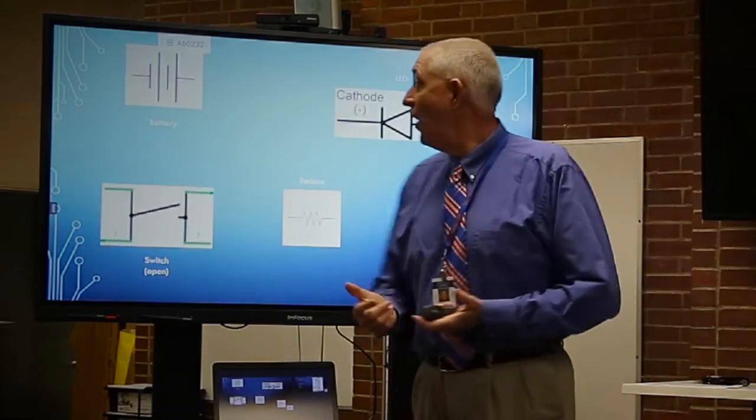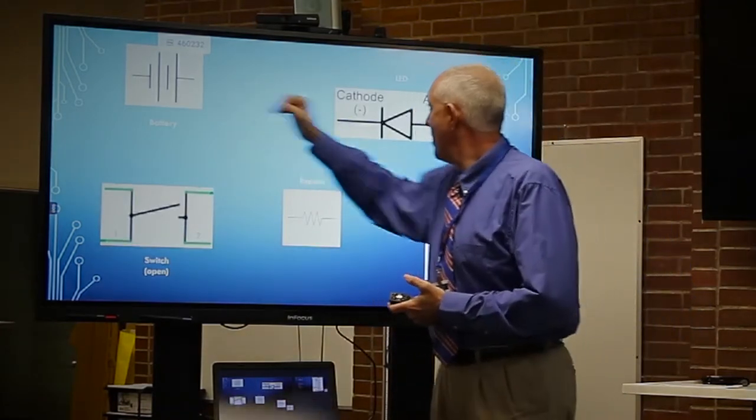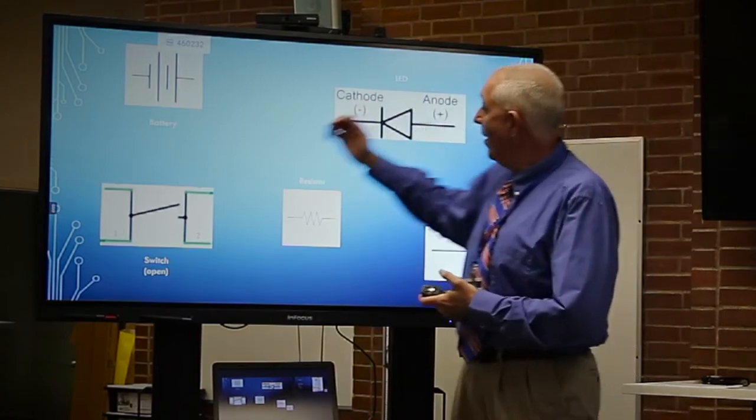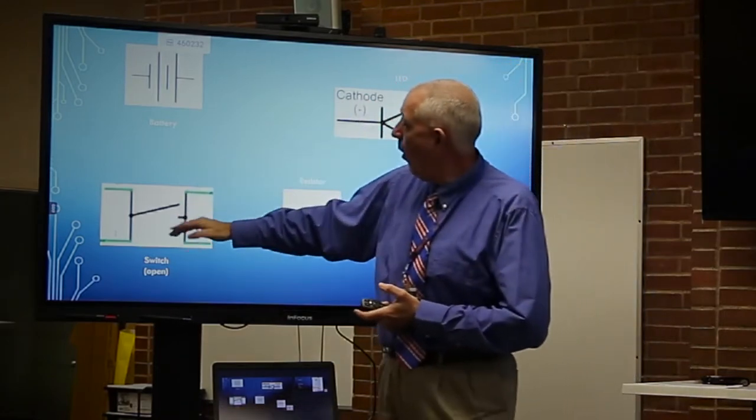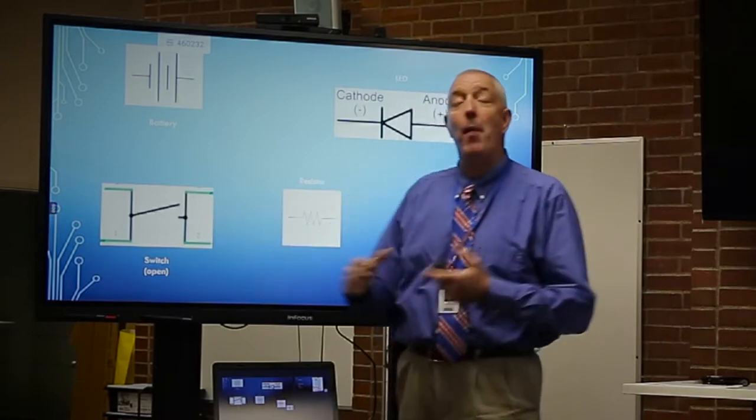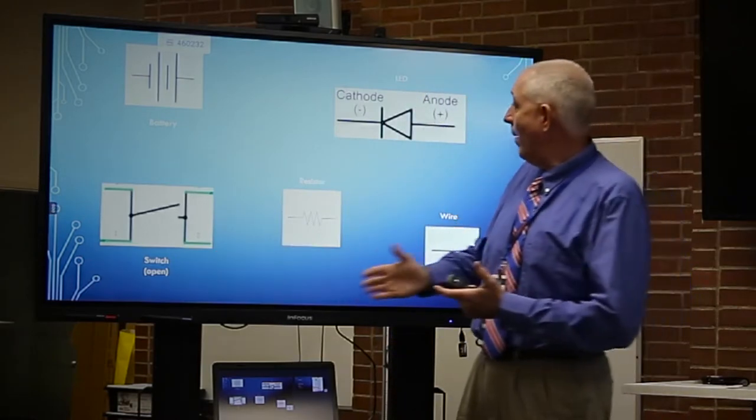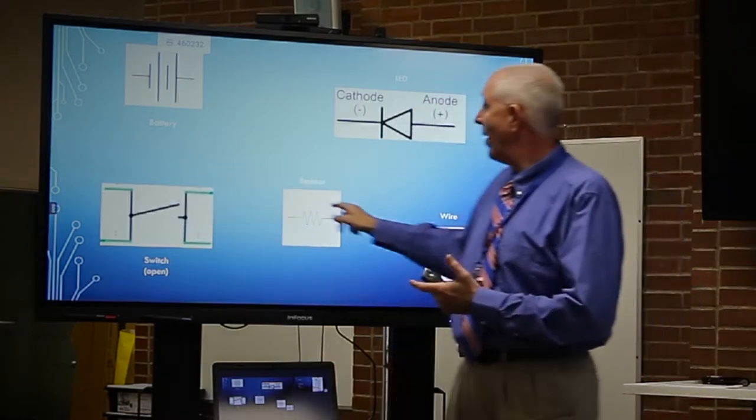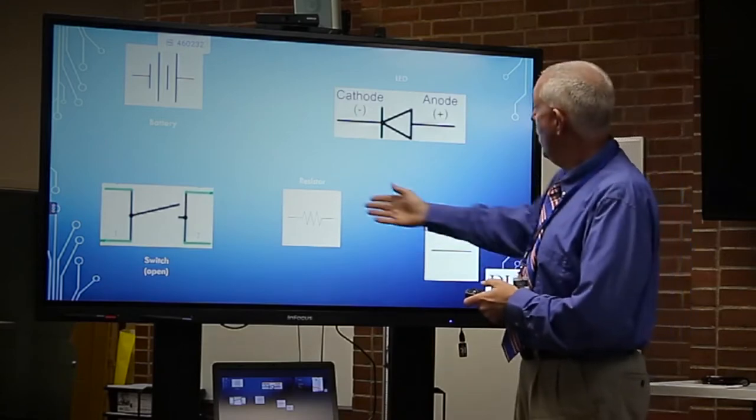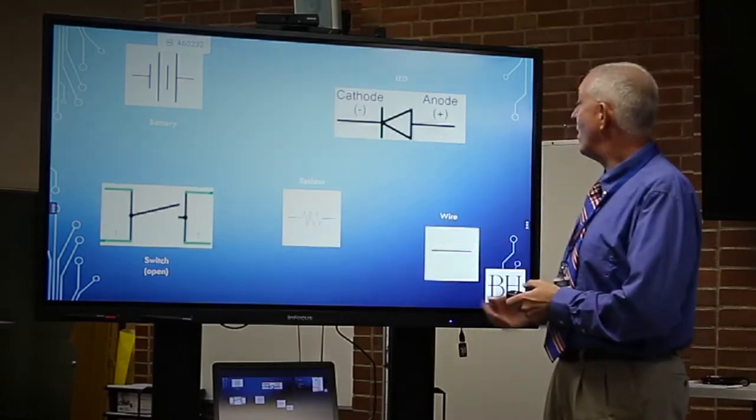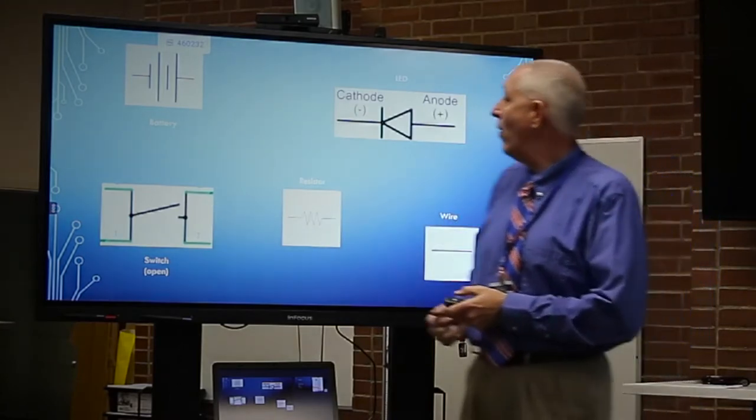The symbols we're going to use today start with our battery. LED, seen that already. This is a switch. Notice it's in the open position because the arm is up. Nothing is flowing. If we close that switch, then we're going to get electricity flow through it. We have a resistor. And finally, we hook everything up with the wire.